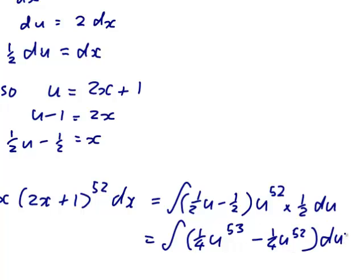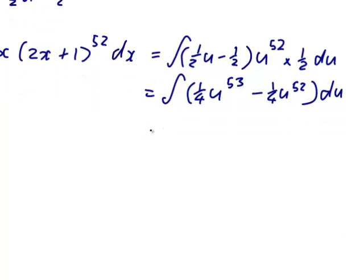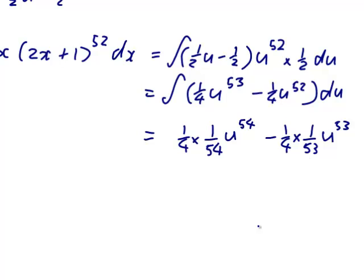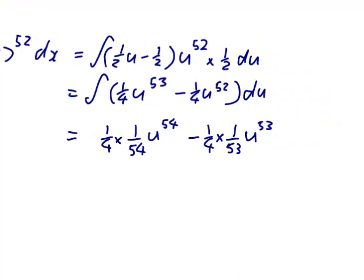So let's see. That's equal to... The quarter will stay there. So 53 will go up to 54, and I'll have to divide by the new power. The quarter will stay there. The 52 will go up to 53, and I'll have to divide by that new power. And because it's an indefinite integral there will be a plus c on the end.